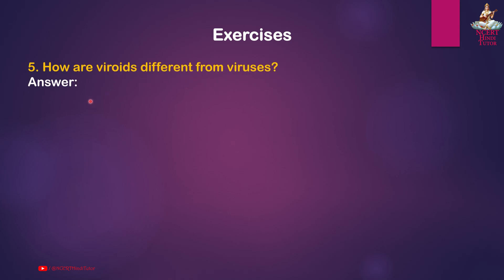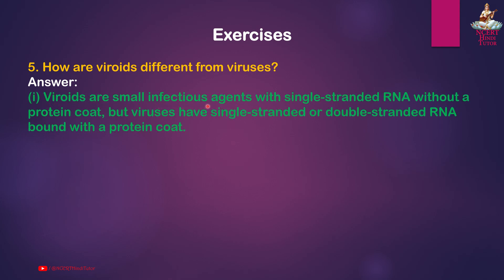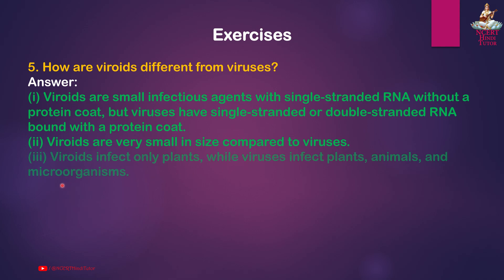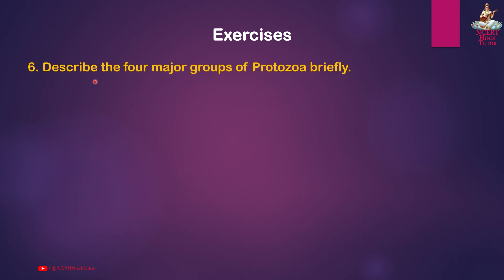These algae produce toxins that kill fish and other aquatic organisms. Question 5: How are viroids different from viruses? Answer: First, viroids are small infectious agents with single-stranded RNA without a protein coat, but viruses have single-stranded or double-stranded RNA bound with a protein coat. Second, viroids are very small in size compared to viruses. Third, viroids infect only plants, while viruses infect plants, animals, and microorganisms.